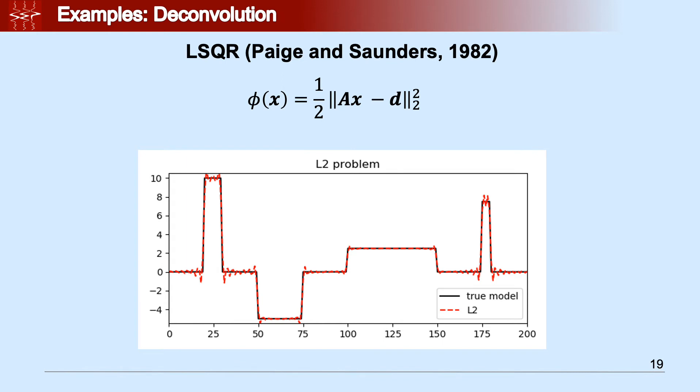Before we show you the application of the L1, let's apply the L2. In this case, instead of using linear conjugate gradient, we also have available LSQR that was proposed by Paige and Saunders in 1982. As you can see, the retrieved signal is not bad, but it's far from being blocky.